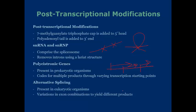And lastly, alternate splicing. This is present in eukaryotic organisms only. This is a variation in exon combination to yield different products. So an example of this is if I were to have one intron here and one intron here, and maybe two exons like that. If I cut this one out, it's going to create a different sequence. So depending on where the cut occurs, this is going to create a different sequence for translation.